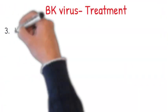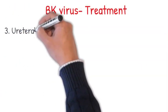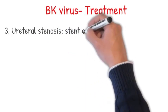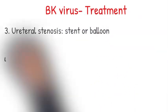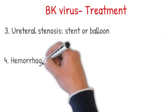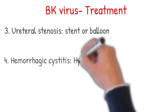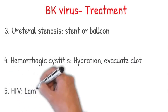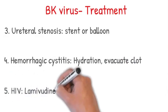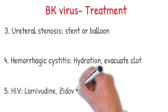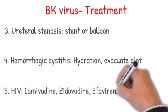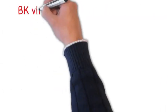For ureteral stenosis, you do stent or balloon. For hemorrhagic cystitis, hydration and evacuate the clot. And finally, for HIV, you give lamivudine, zidovudine, and efavirenz.